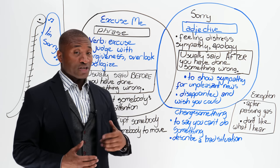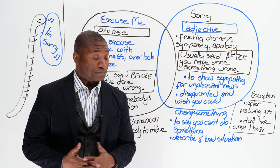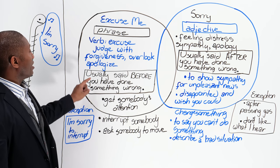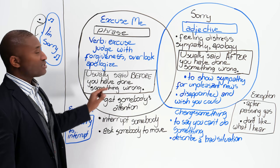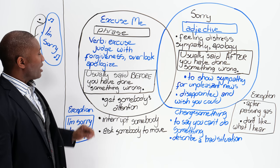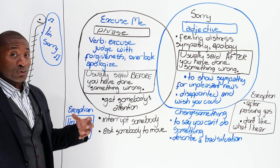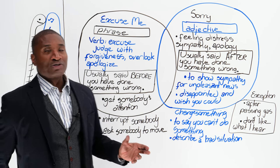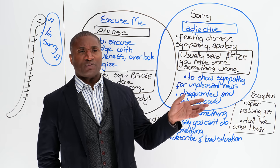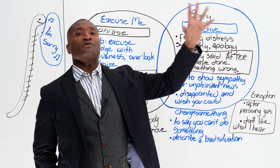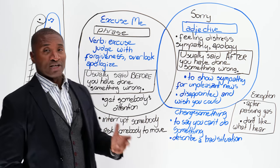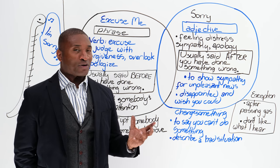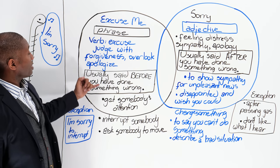When you say excuse me, you can be apologizing to someone. To get a general rule: excuse me is usually said before you have done something wrong. The first example is to get someone's attention. In a restaurant, you'll find a lot of Canadians or Americans or British people going, excuse me, excuse me, because they want to get your attention. They haven't done anything wrong, but they do need your attention, so excuse me comes up there.